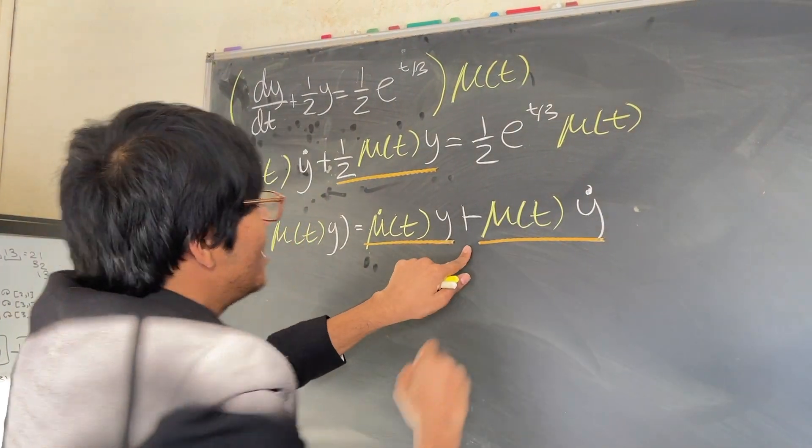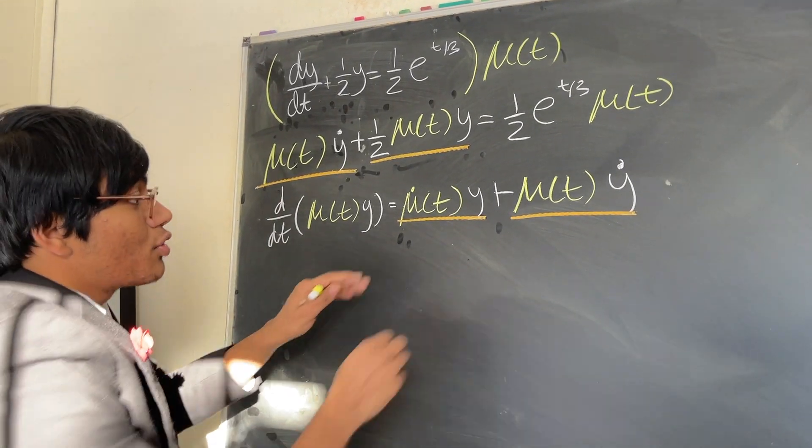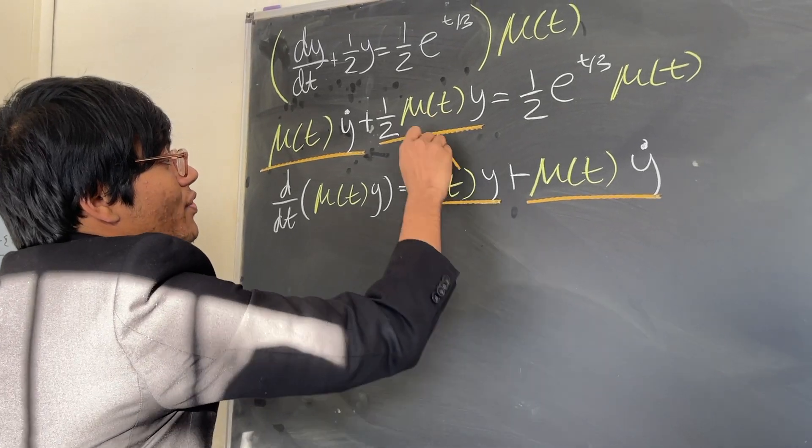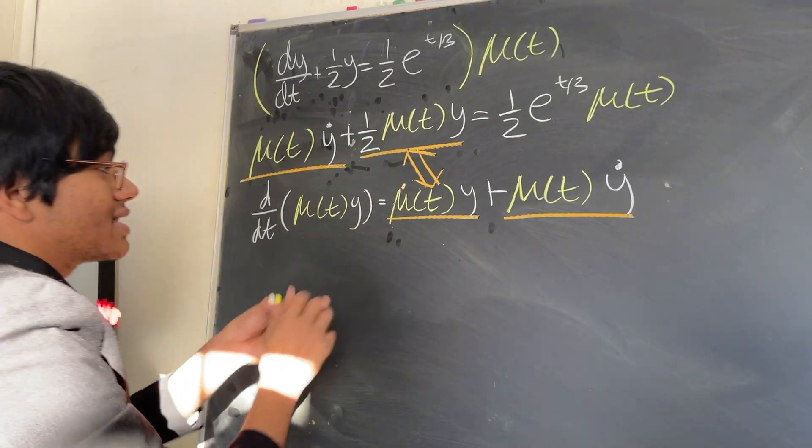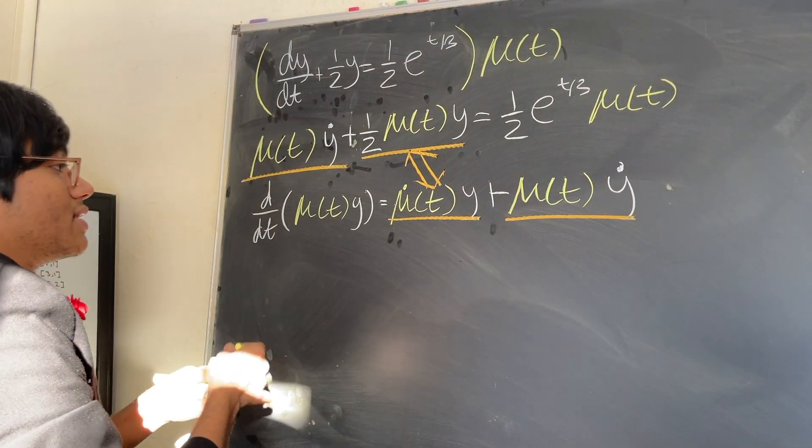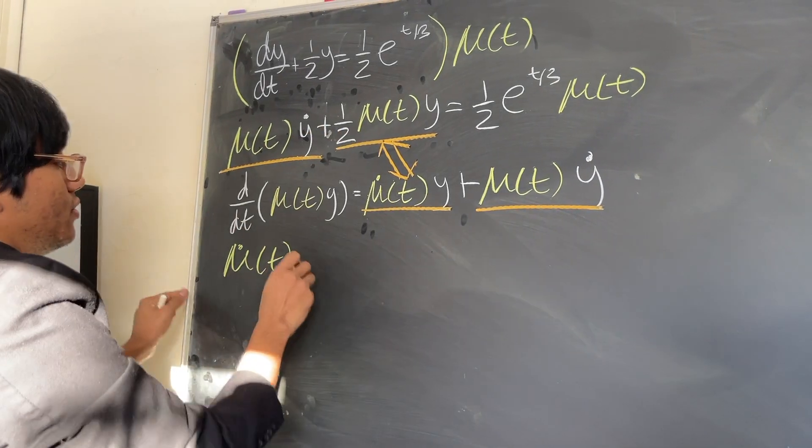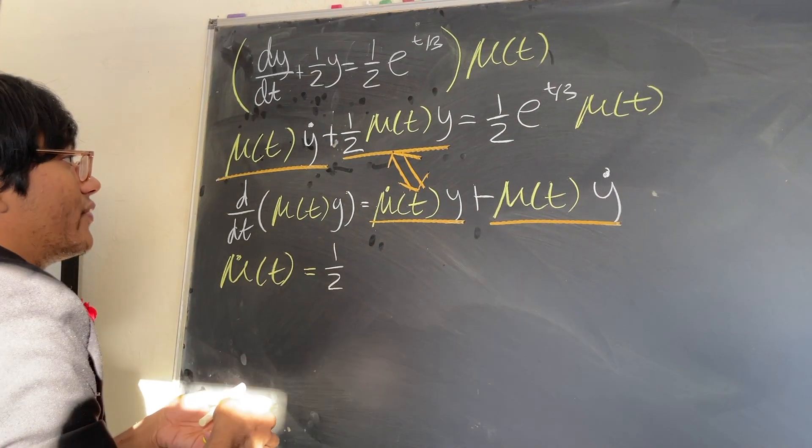And this term, mu of t y dot, is exactly the same as this term. So to make these two equal, all I have to do is make sure these two terms are equal. So how am I going to do that? Well, I'm just going to set these two equal to each other. So we're going to have mu prime of t is equal to half of mu of t.